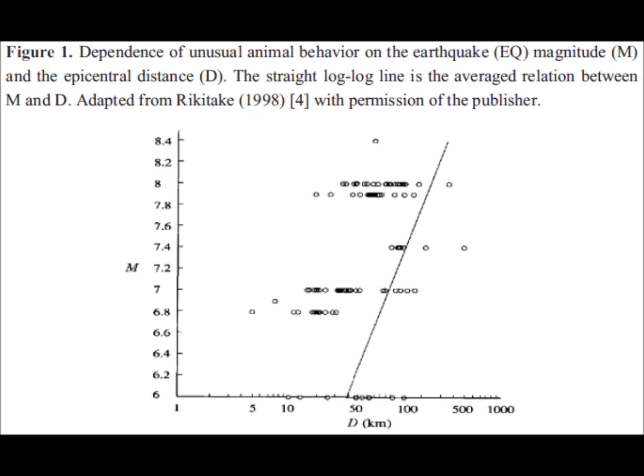In figure one we see the dependence of unusual animal behavior on earthquake magnitude and the epicenter distance — meaning the distance from the epicenter that the event occurred. Both of these are logarithmic in scale; magnitude goes up exponentially as you go up the scale, with larger and larger increments in terms of the power.